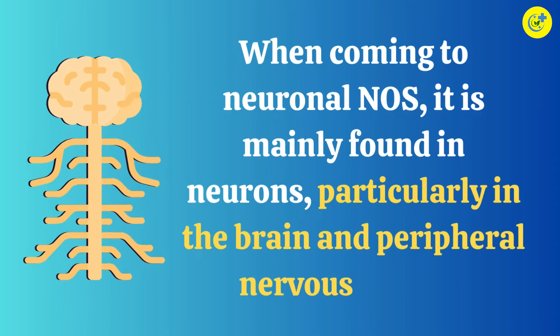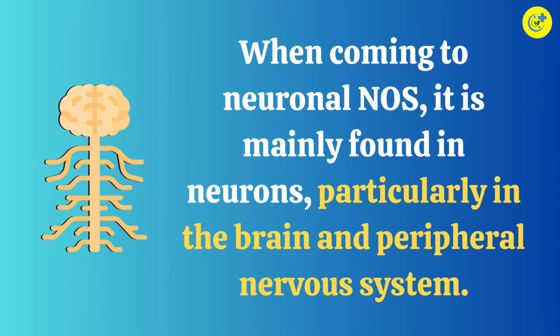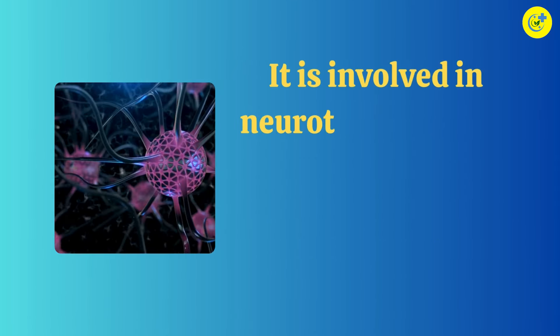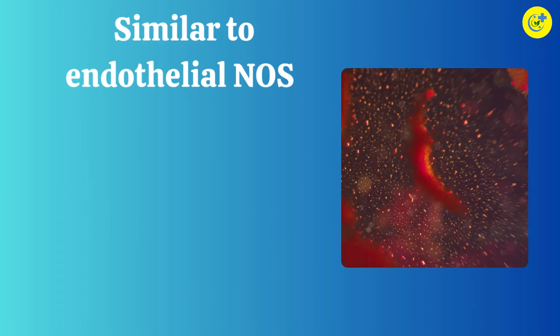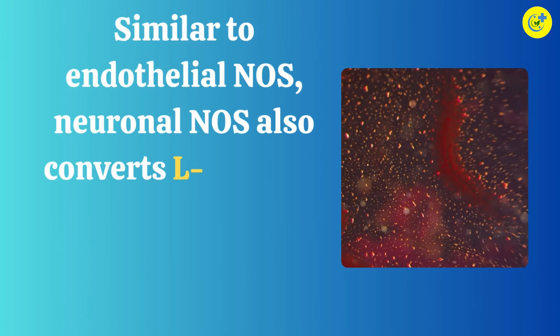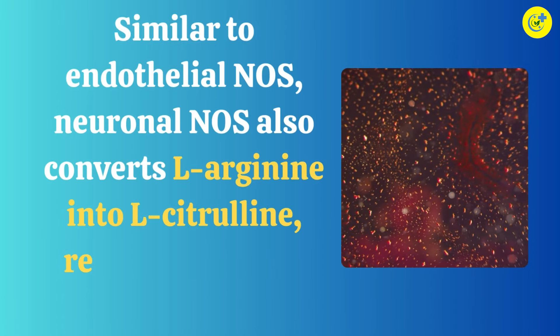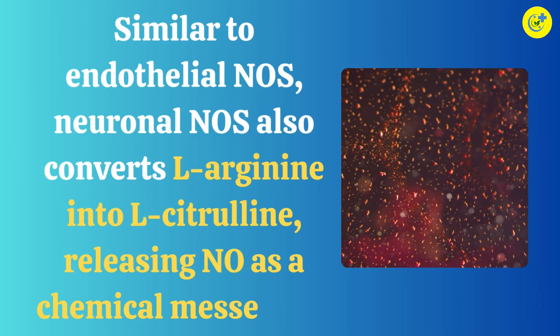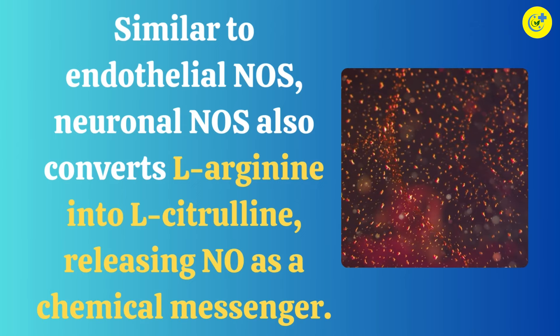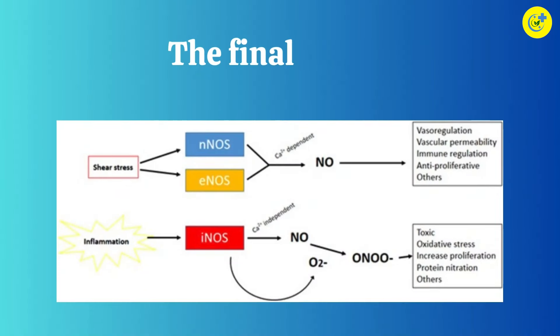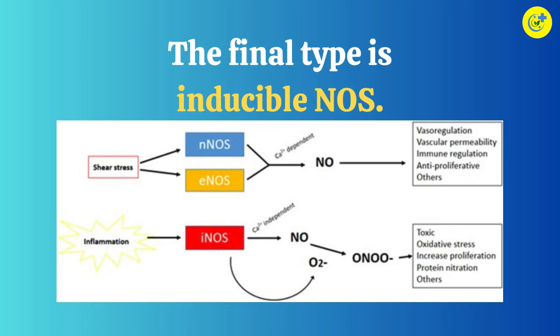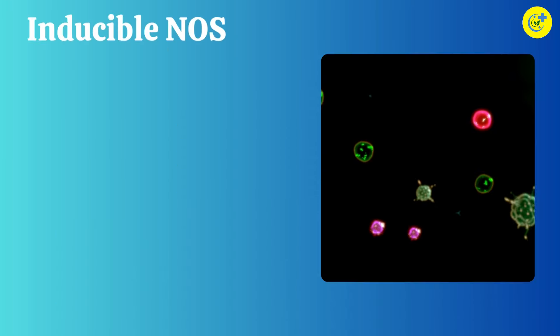When coming to neuronal NOS, it is mainly found in neurons, particularly in the brain and the peripheral nervous system. It is involved in neurotransmission and serves as a signaling molecule between nerve cells. Similar to endothelial NOS, neuronal NOS also converts L-arginine into L-citrulline, releasing NO as a chemical messenger.